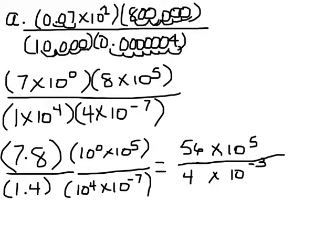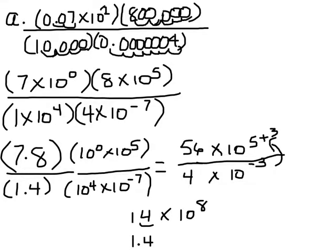When I divide 56 by 4, I get 14. And here when this 3 goes up, remember it's going to become plus 3. So I have 14 times 10 to the 8th. But 14 is not in scientific notation, so I'm going to have to move this decimal. That will be 1.4 times 10 to the 9th, because I moved it one place to the left.